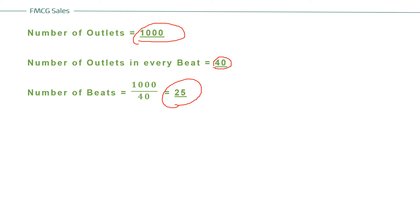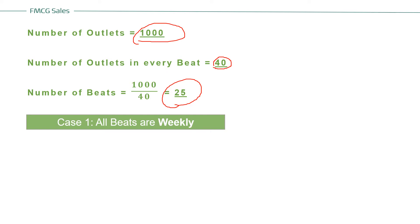The number of beats to cover is 25. How many sales officers would be required? Let's look at Case 1, where all beats are weekly. Weekly means every beat is covered every week — there are four weeks in a month, so every Monday you cover a specific beat. Bi-weekly means you cover a beat twice in a month — every alternate Monday or alternate Tuesday, i.e., every 14 days.